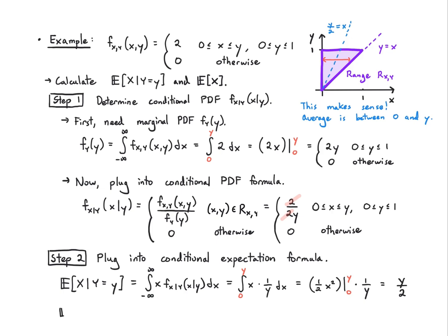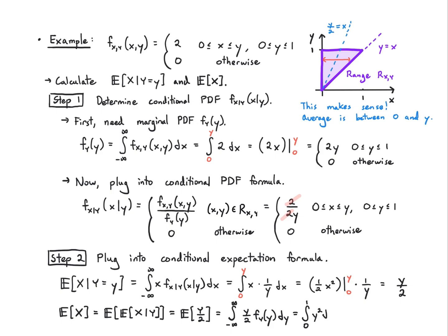Finally, to get E of X, let's use the law of total expectation. We already have the conditional expectation y/2, so we take the integral of y/2 times the marginal PDF of y from 0 to 1. That gives us 1/3. Understanding the mechanics of how conditional expectation works is going to be really important for working out those applications later.